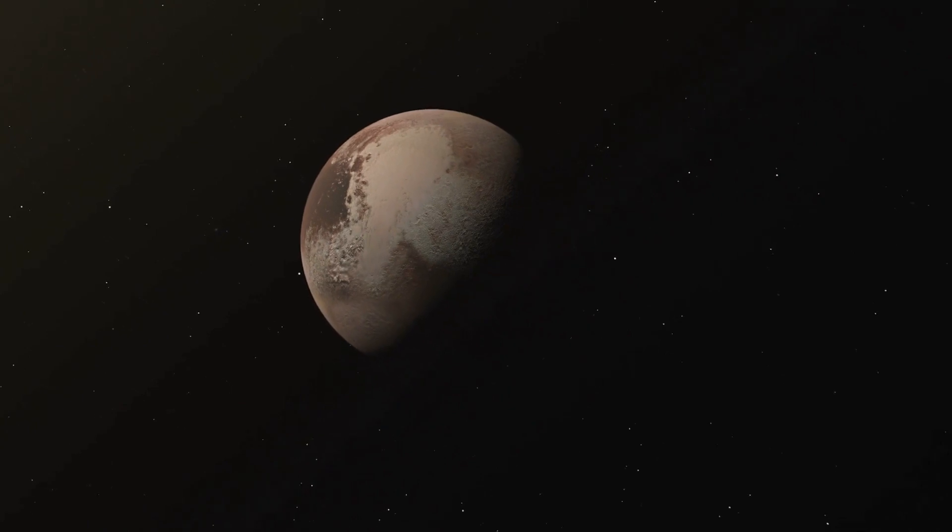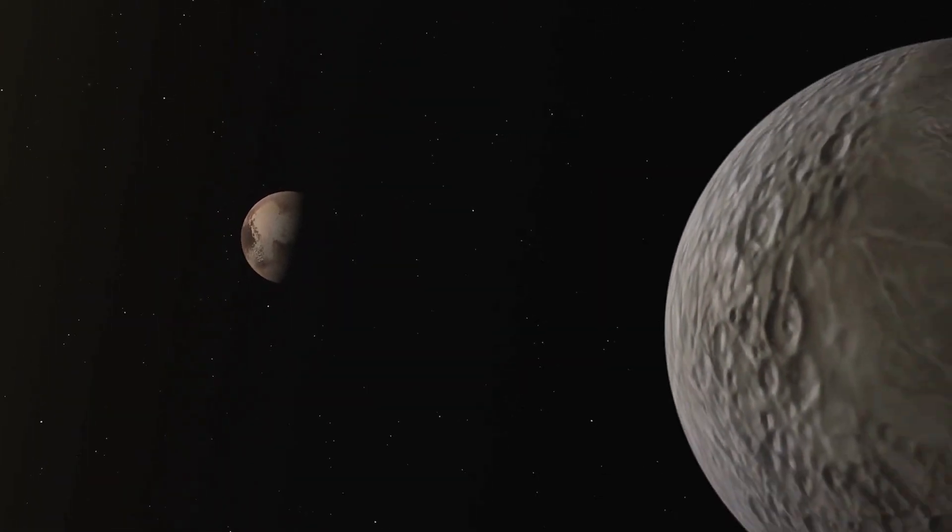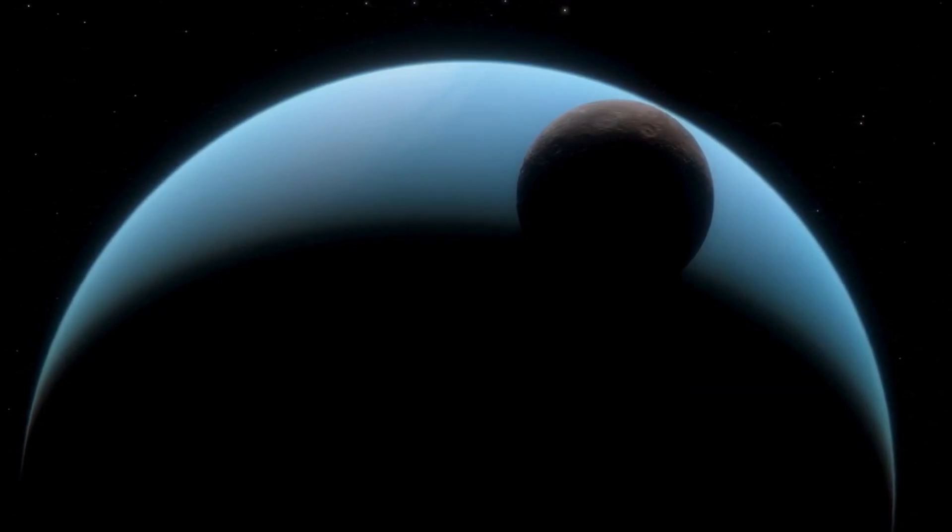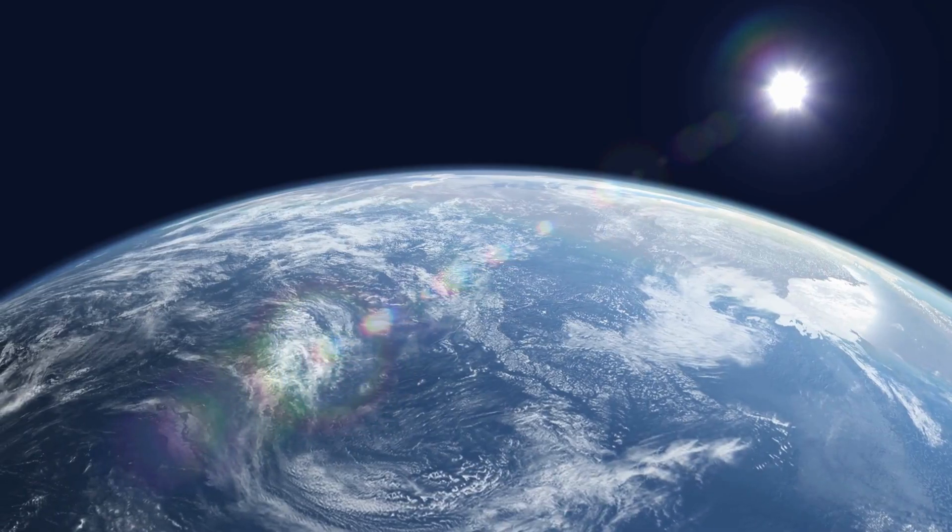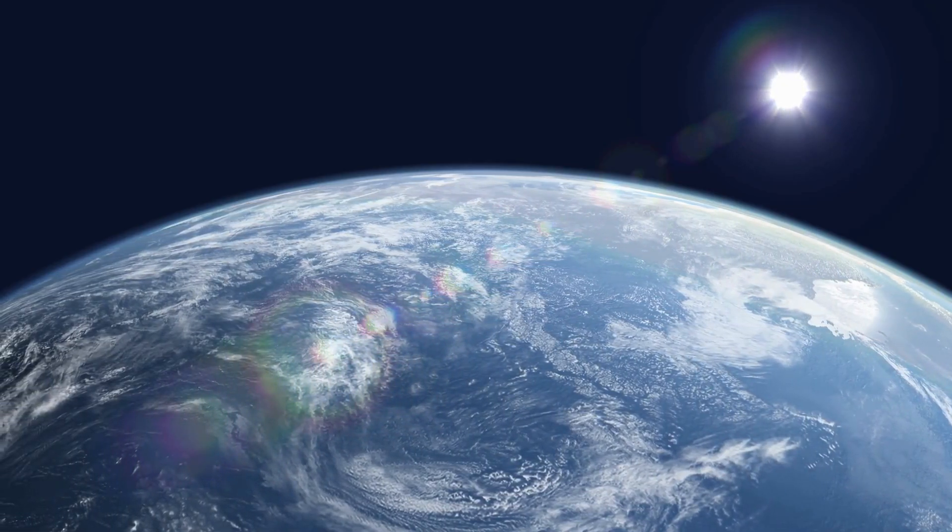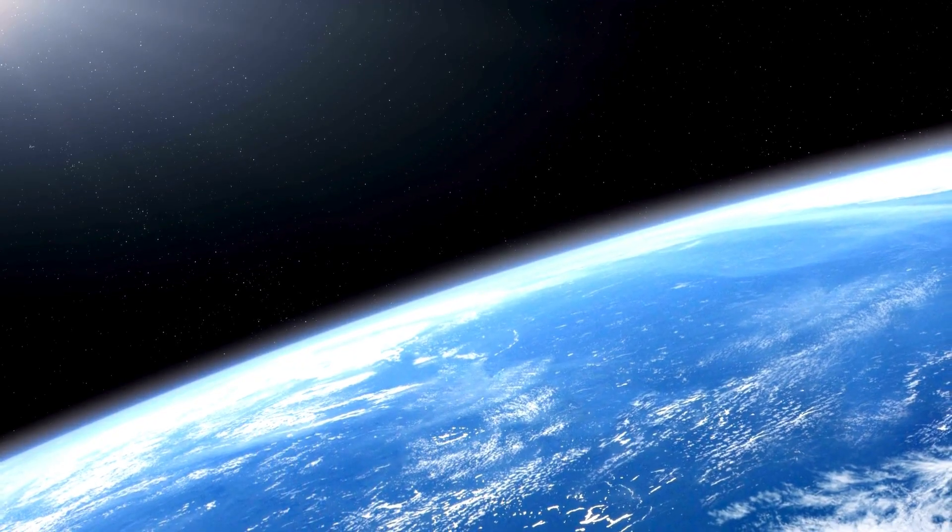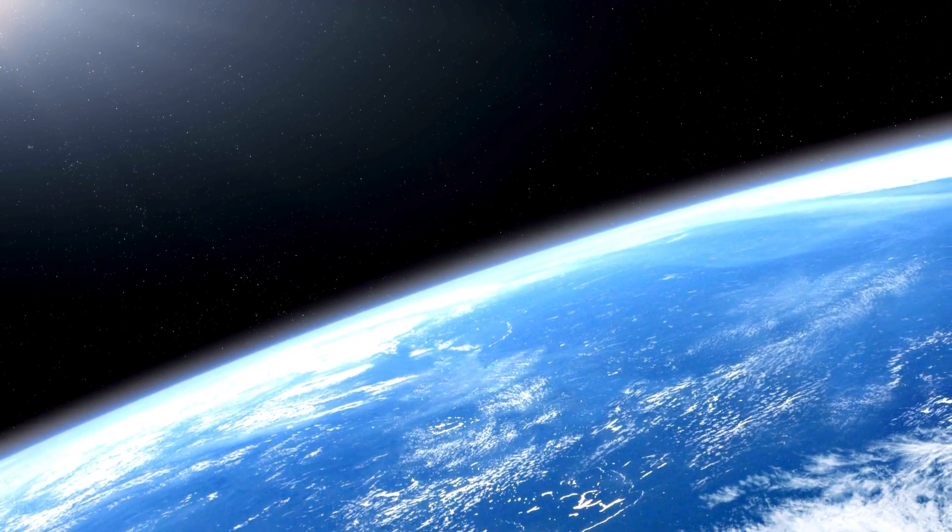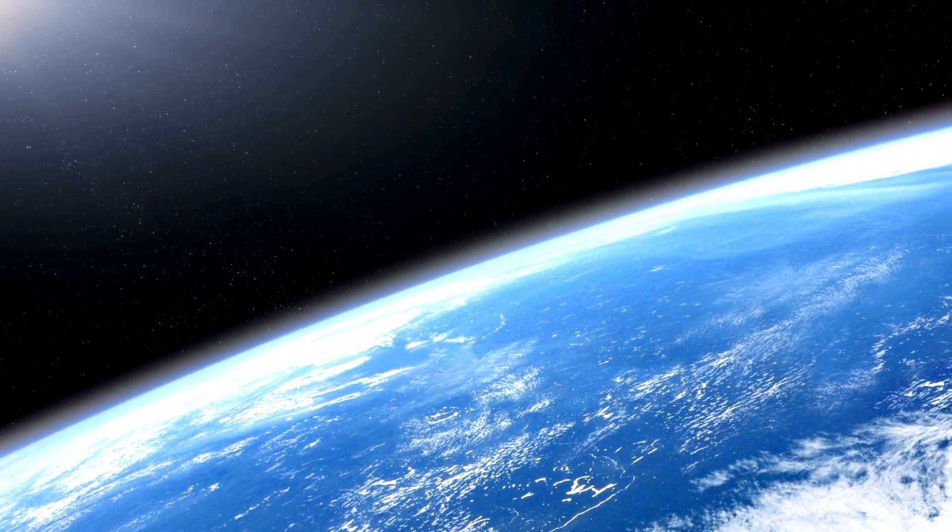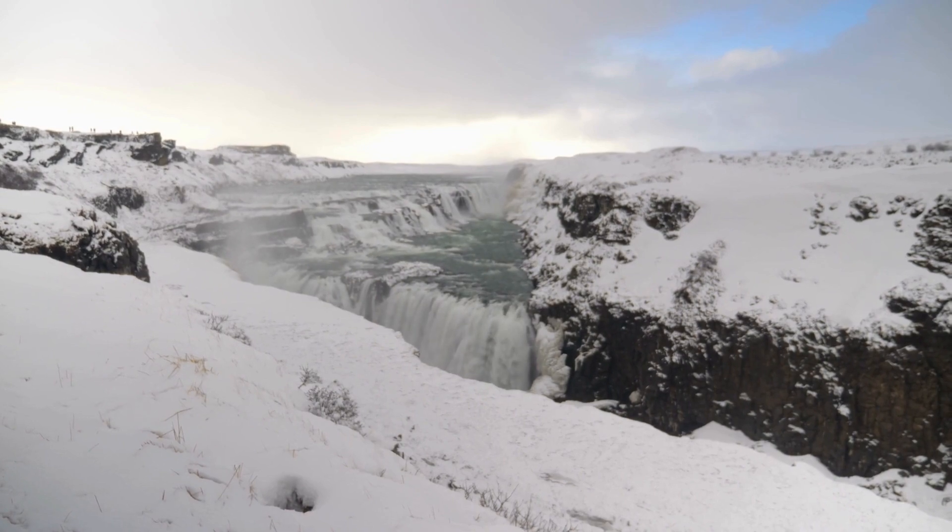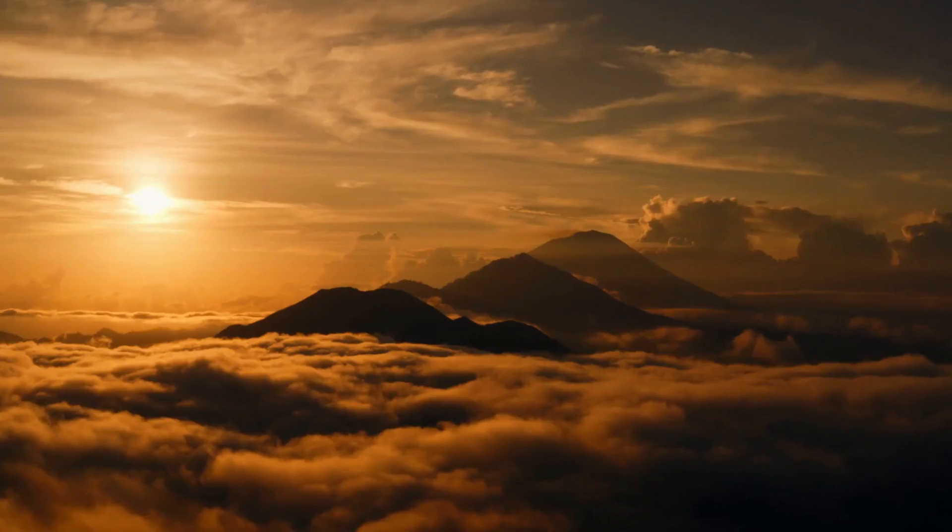Initially believed to harbor only three exoplanets, additional scrutiny of existing data and further observations suggest the possibility of six planets in the system, with three or even four potentially habitable super-Earths. Now, what exactly qualifies as a super-Earth? This term designates a planet larger than Earth, but not as expansive as gas giants like Jupiter and Saturn. Super-Earths can be composed of rock, ice, or a combination of both, potentially possessing atmospheres conducive to diverse forms of life.